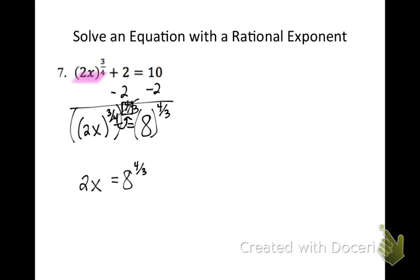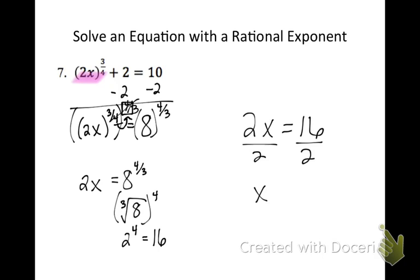And I can simplify 8 to the 4 thirds if I recall my radical rules from a couple concepts ago. This is going to be the cube root of 8 all to the fourth power. The cube root of 8 is 2, so 2 to the fourth power is 16. So now what I have left is 2x equals 16. And I can just divide both sides by 2. I get x equals 8.